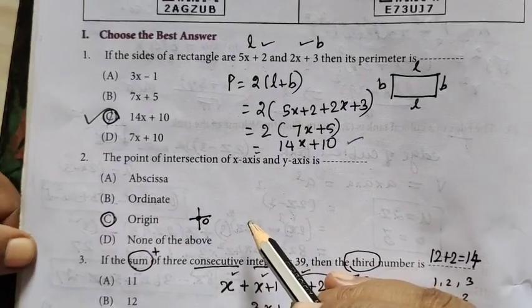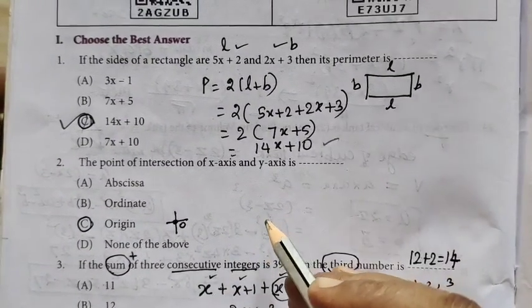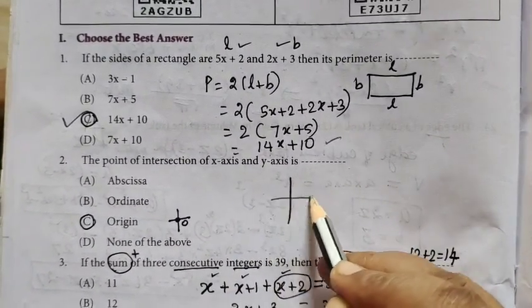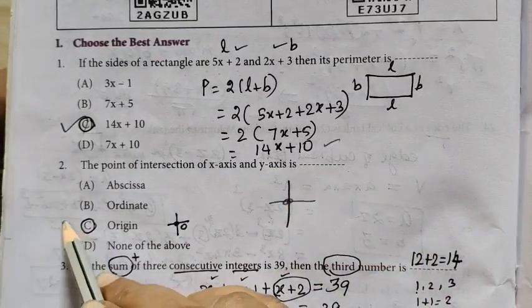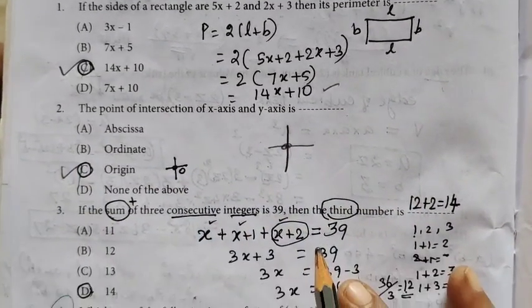Question 2: The point of intersection of X-axis and Y-axis is the origin.